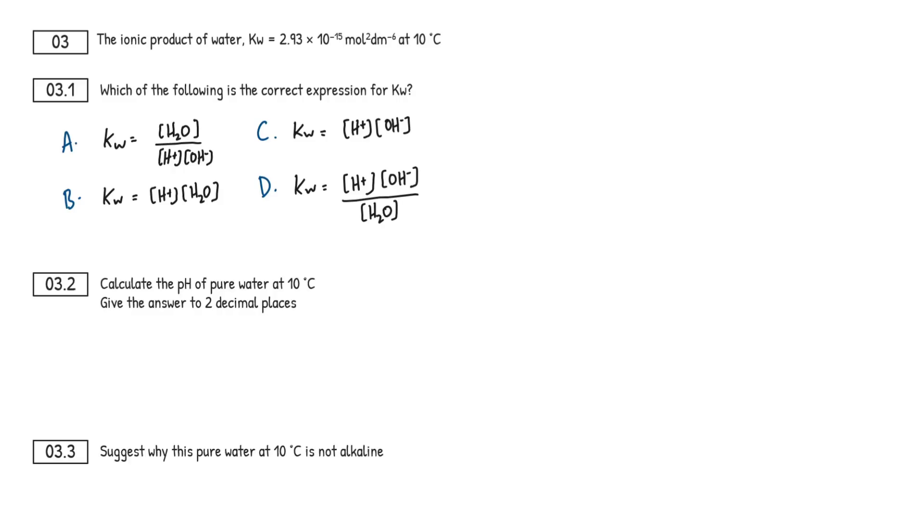All right guys, so this video is going to cover a set of questions from an AQA A-level chem past paper, specifically paper 1 June 2017. The paper, mark scheme and examiner's report will be linked in the description below, but unfortunately as always I can't show the paper because of the AQA copyright, so if you want to pause the video and check out the question and mark scheme yourself, feel free to do so.